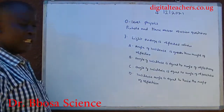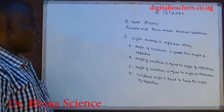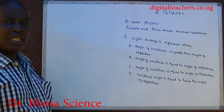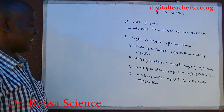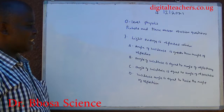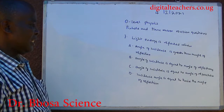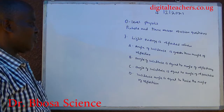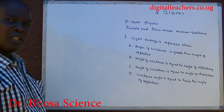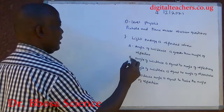Number seven: light energy is reflected when A, the angle of incidence is greater than the angle of reflection; B, the angle of incidence is equal to the angle of reflection; C, the angle of incidence is equal to the angle of reflection; D, the incidence angle is equal to twice the angle of reflection. You can pause and answer. The answer is B.